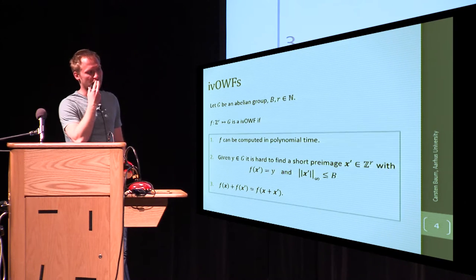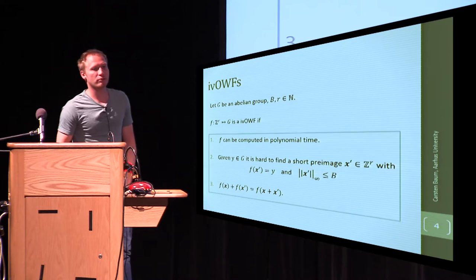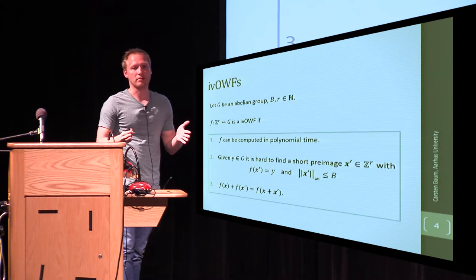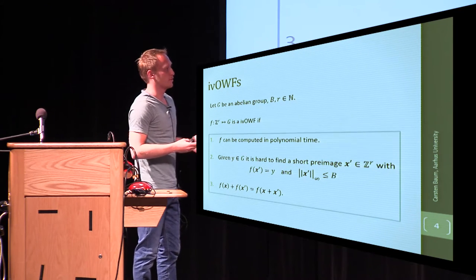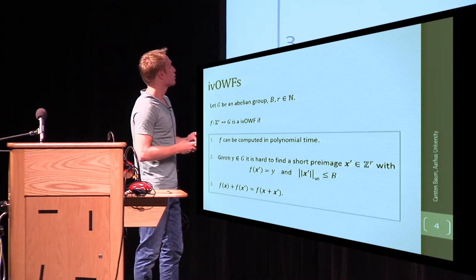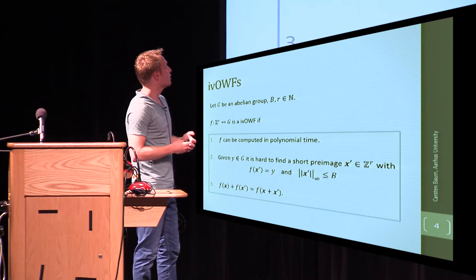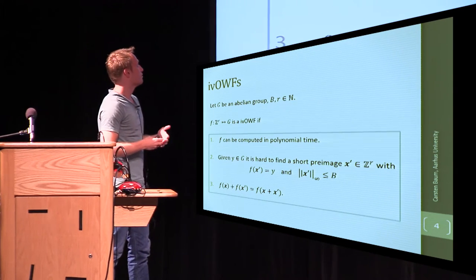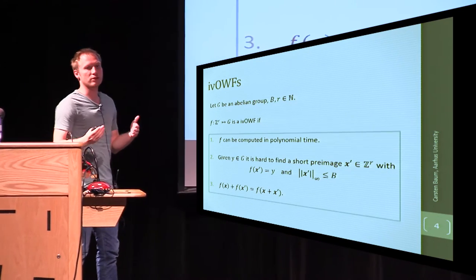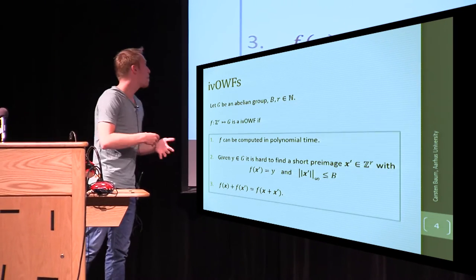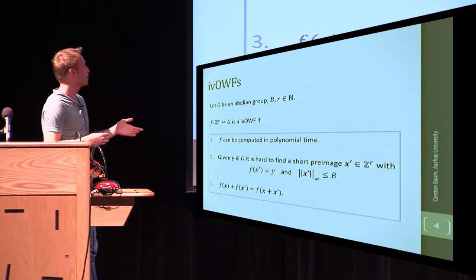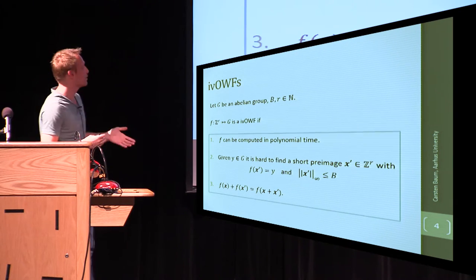So what is a homomorphic one-way function over the integers, or short IV one-way function? So assume we have an abelian group G, and we map from the integers or a vector of integers into this abelian group G.